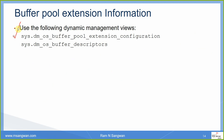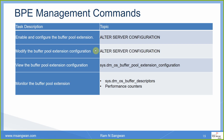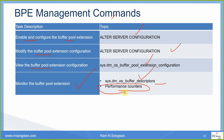You can get information through views: sys.dm_os_buffer_pool_extension_configuration gives configuration information, and sys.dm_os_buffer_descriptors gives information about buffer pool extension pages. In summary, BPE management commands include: ALTER SERVER CONFIGURATION to enable and configure the buffer pool; that view to monitor configuration; sys.dm_os_buffer_descriptors and performance counters to monitor the buffer pool extension.